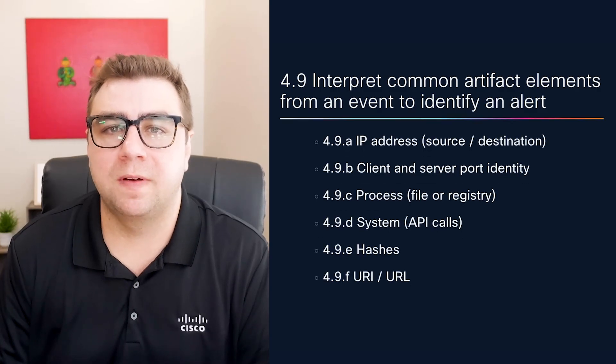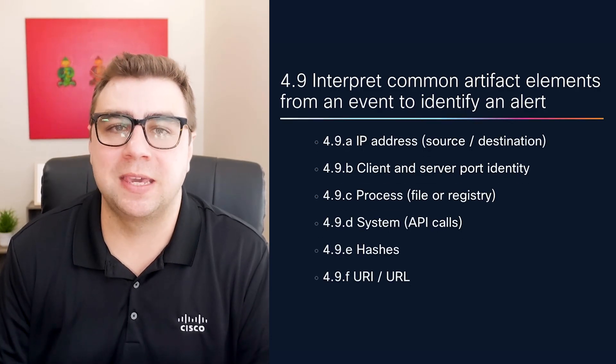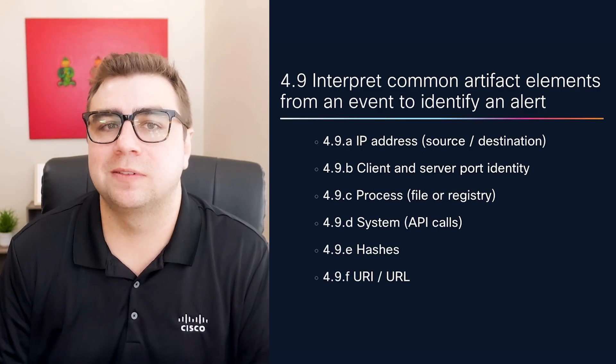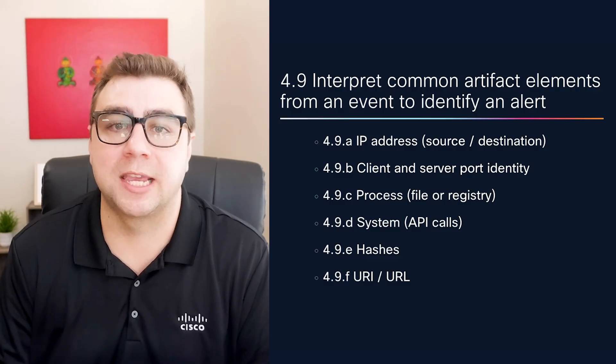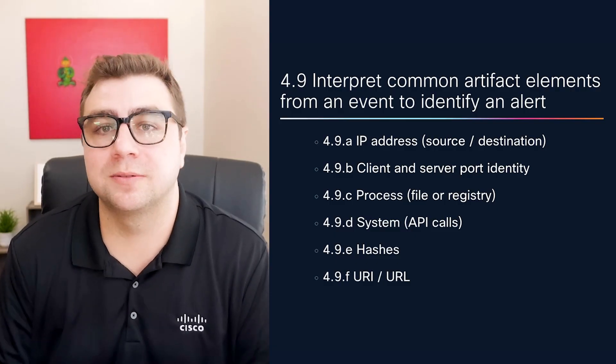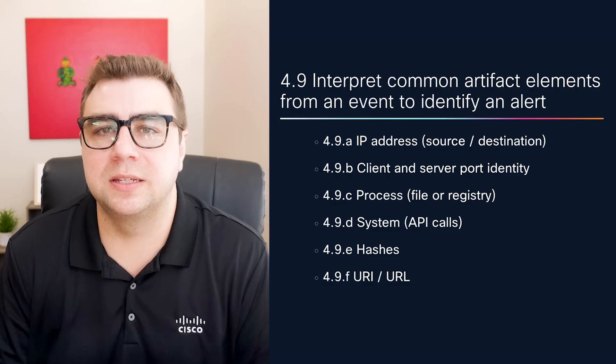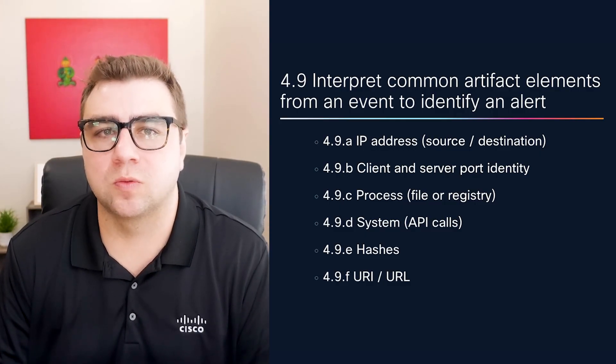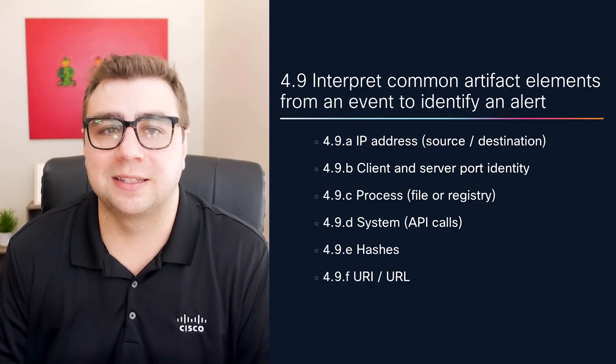One skill that's especially useful is knowing how to extract files or artifacts from a TCP stream. The exam won't make you do it manually, but it might show you a Wireshark output and ask what file type was transferred or what the source address was. You'll also need to recognize common artifacts and alerts — things like IP addresses, port numbers, file hashes, registry changes, API calls, or URLs. Being able to connect these elements into the bigger picture is the difference between just reading data and understanding an attack.